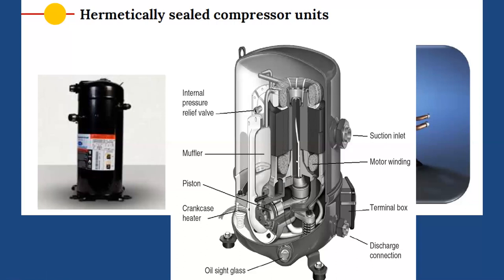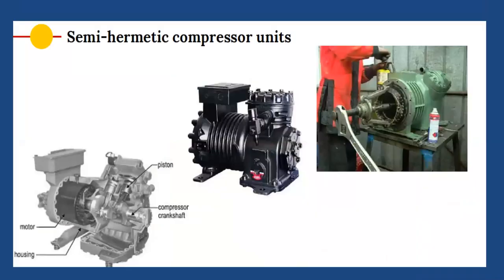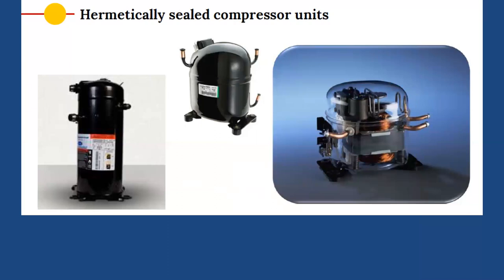The use of hermetically sealed compressors is restricted to units of around 10 to 15 TR capacity. Scroll compressors in hermetic units are available up to about 40 TR capacity, while reciprocating hermetic compressors are generally found up to 10 to 15 TR. Their use is restricted to package air conditioners — that is, small to medium capacity applications. The three types according to outer construction are: open-type, semi-hermetic, and hermetically sealed compressor units.